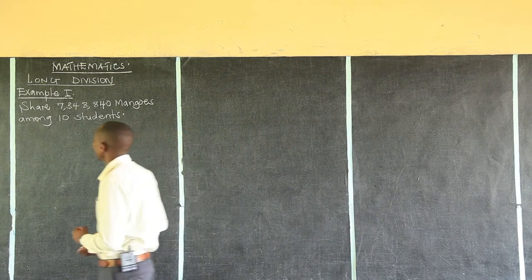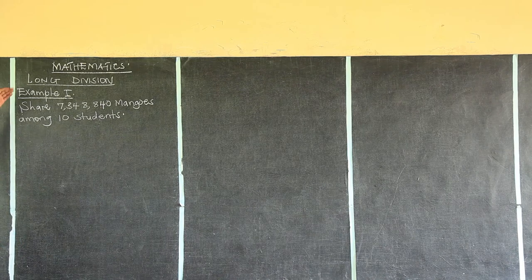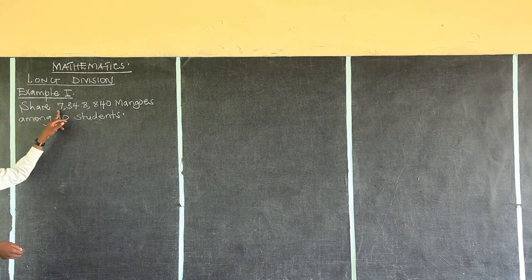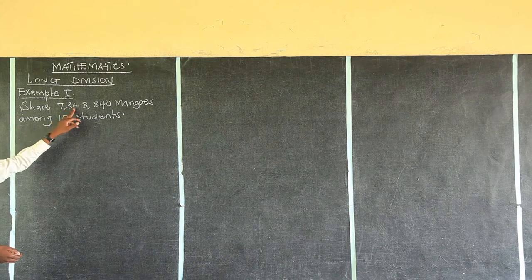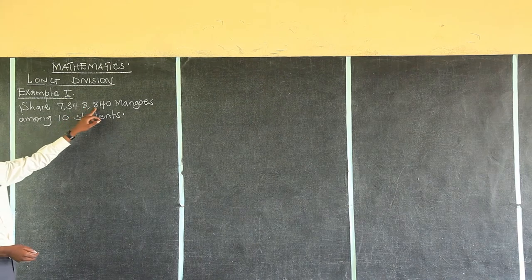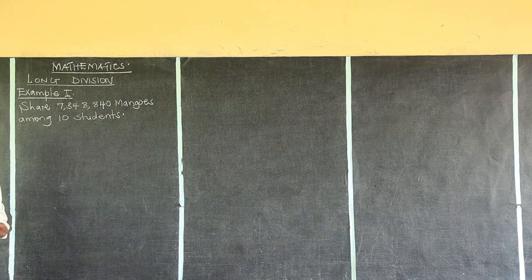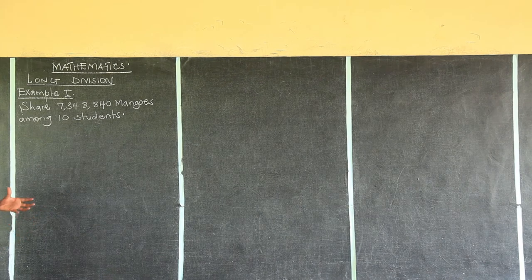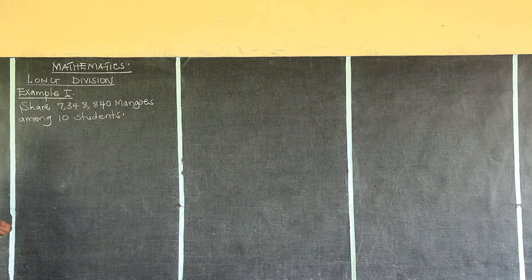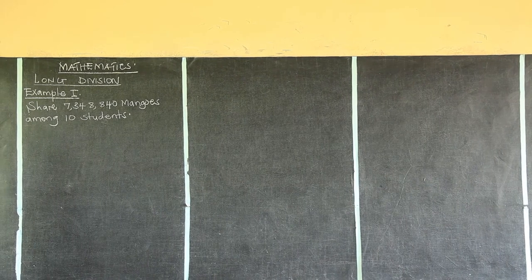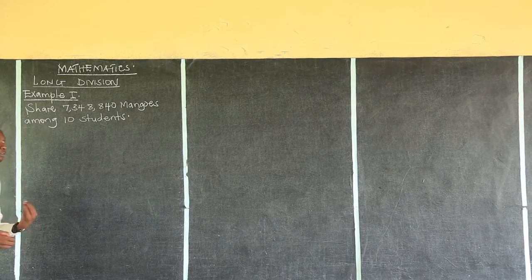We shall begin with the first example on long division. The first example says: share 7,348,840 mangoes among 10 students. That is the number given to us and they want us to share those mangoes among 10 students. We want to see whether this number can be exactly divisible by 10 or not.